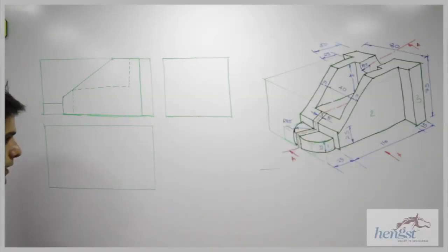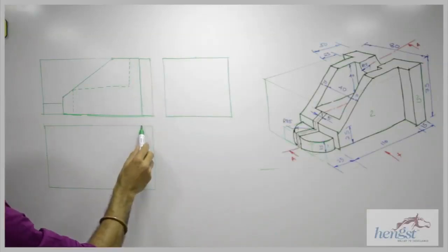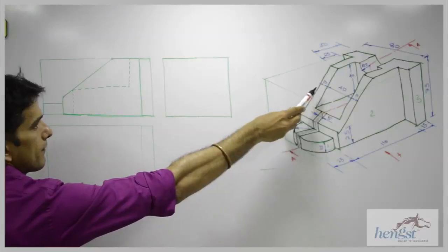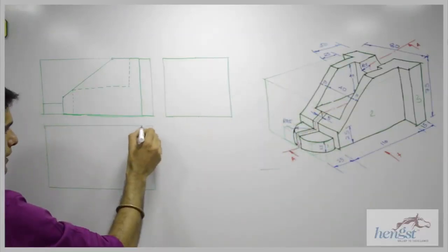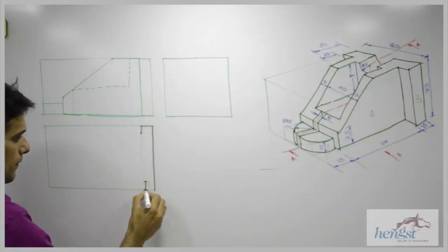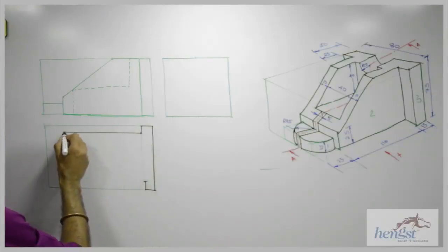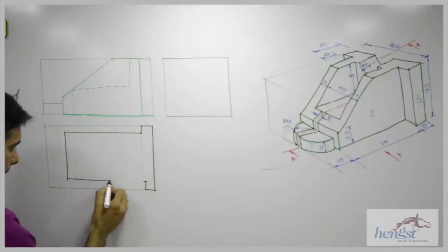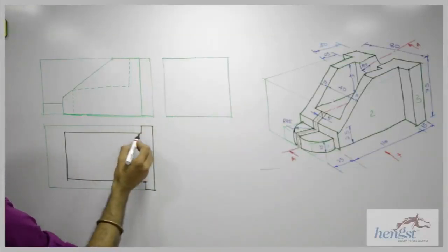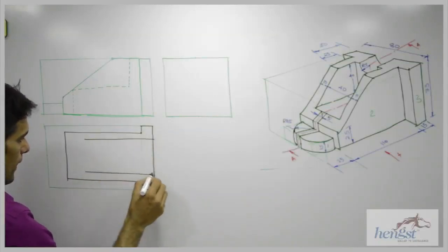Now we will see the top view. In the top view, you can project from the front view. This part — it is given 10, 40, 10, and that is 80. So you can take 10 on both the sides. This will be full dark. Then till 110 we have this part. They have given 10, so we can take 10 width.